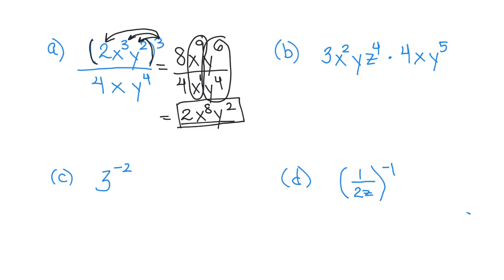Now on the next one, we have multiplication. So I multiply 3 times 4, which is 12. And then I have x squared times x. When the base is the same and you're multiplying, we're going to add the exponents. So 2 plus 1 is 3.